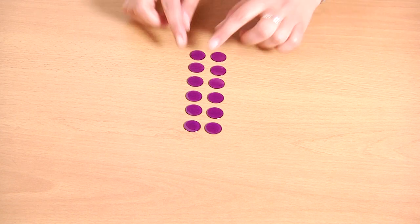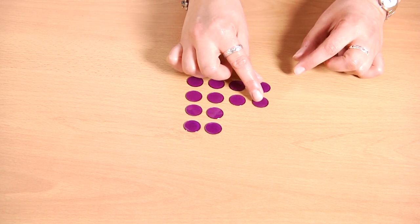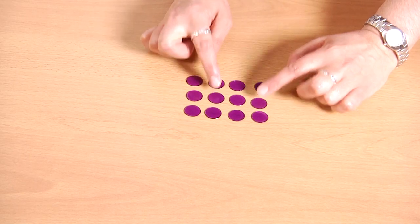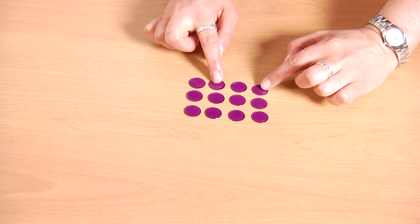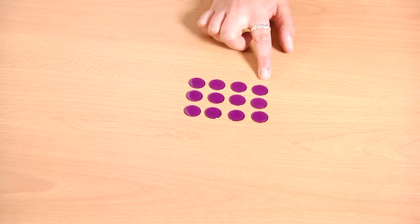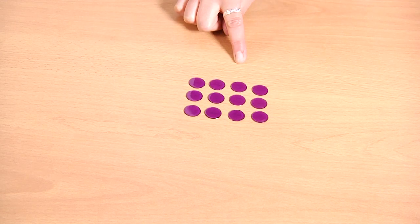And we can do this in any way for any size group as long as they stay within a neat rectangular set. Three, six, nine, twelve. This way of organizing something is called an array.